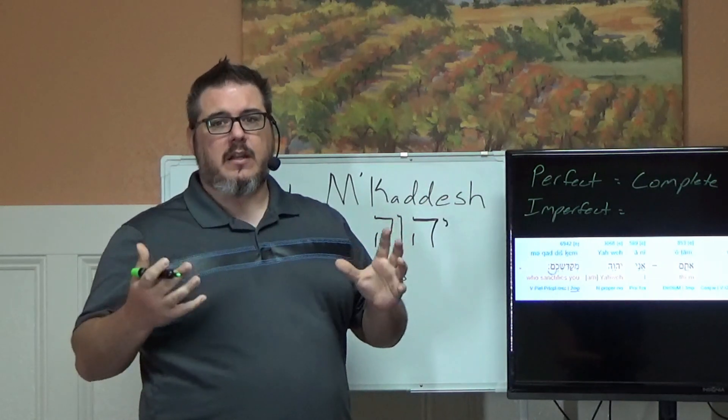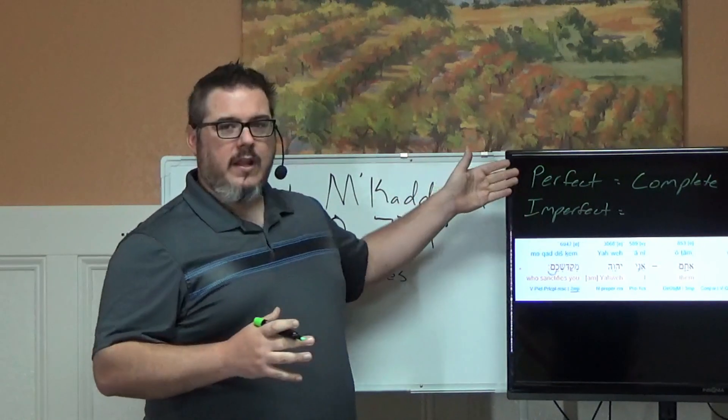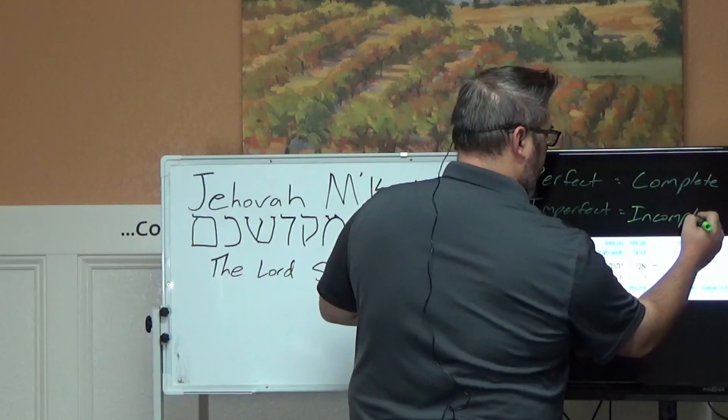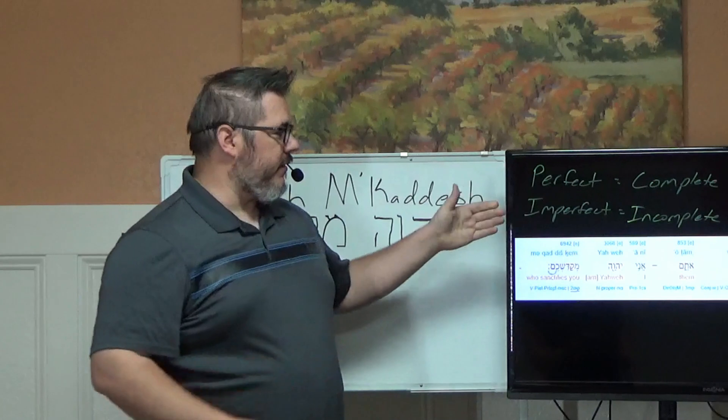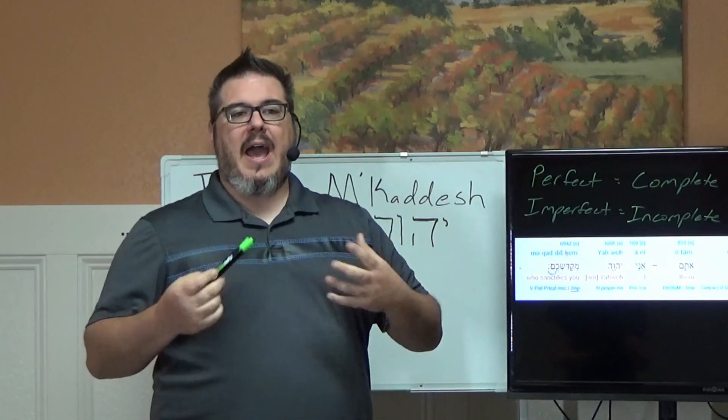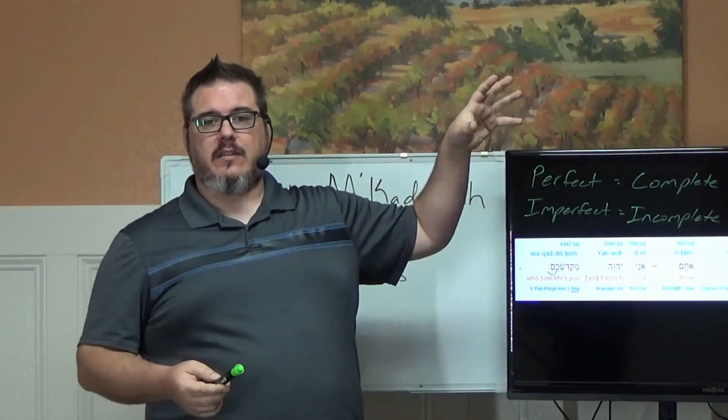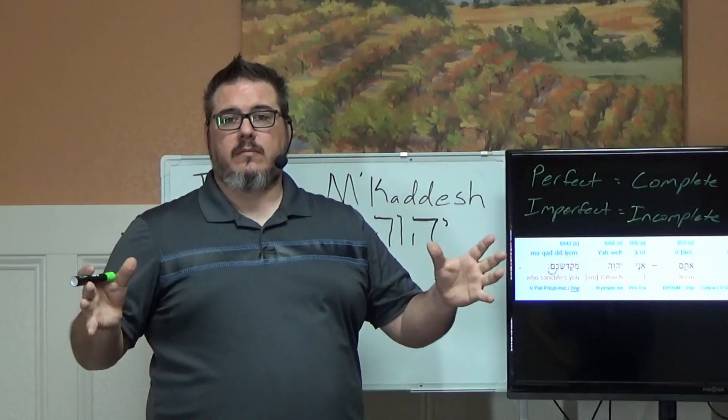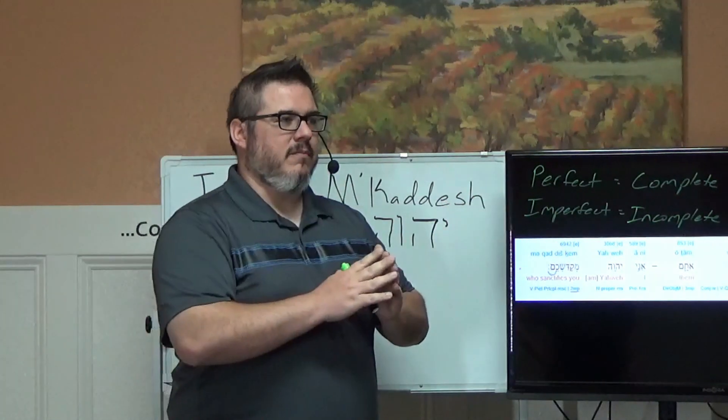And there are instances in the scripture where God refers to things that hasn't happened yet, but he uses the perfect tense. And it's awesome if you think about it, because in God's reality, in the way that is beyond us, it's already complete. Now when we get into the imperfect, we are talking about an incomplete. The imperfect denotes an act that is not complete. So it's an act that's ongoing in that way.